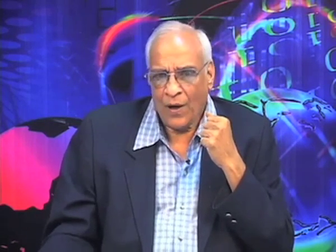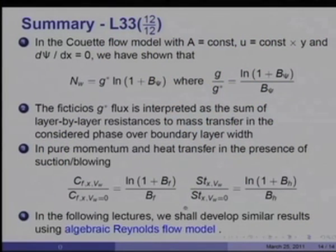The Couette flow model recovers results expected from a boundary layer flow model and also from the Stefan flow model, and provides an opportunity to evaluate the effect of property variations, which will be taken up in subsequent lectures. In the next lectures, we will develop very similar results via the algebraic Reynolds flow model and examine what form the n_w and B relation takes as per the Reynolds algebraic flow model.